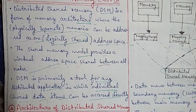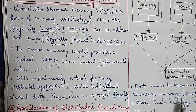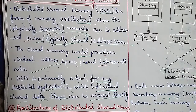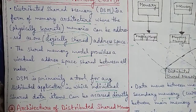DSM - Distributed Shared Memory - is an abstraction used for sharing data between computers that do not share physical memory. Basically, processes in DSM read and update data that appears in ordinary memory within their address space.